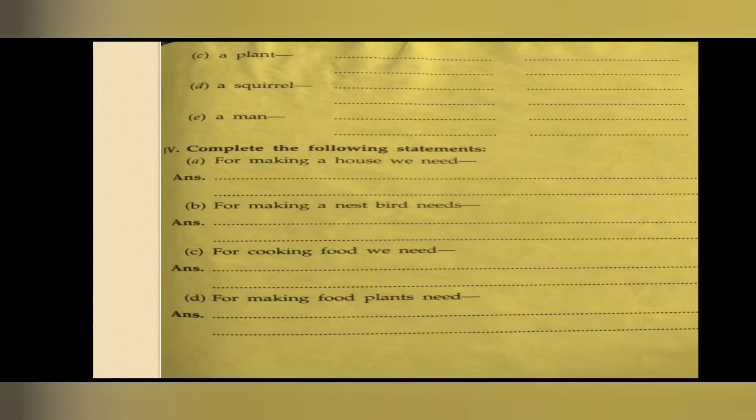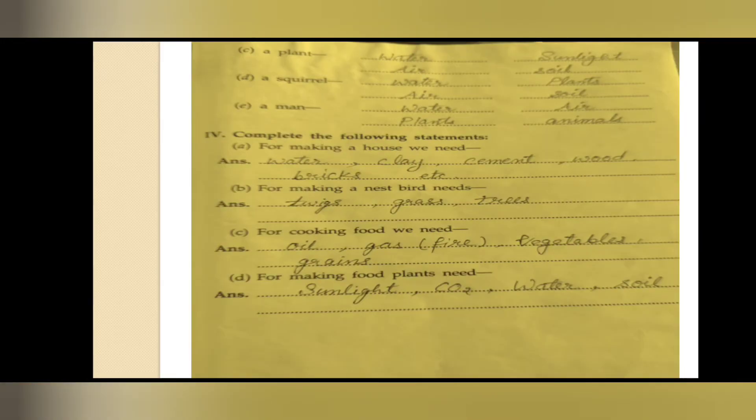Next, complete the following statements. For making a house, what things do we need? For a bird to make a nest, what things do they need? For making food, what things are needed? And for plants to make food, what do they need? What they need, you have to write. I have done it for you, and these are simple things that you yourself can think and write.